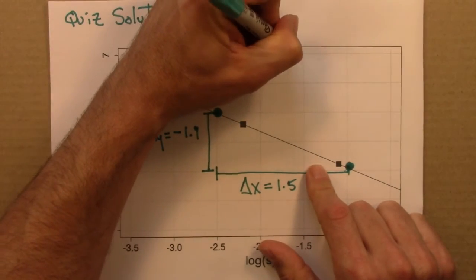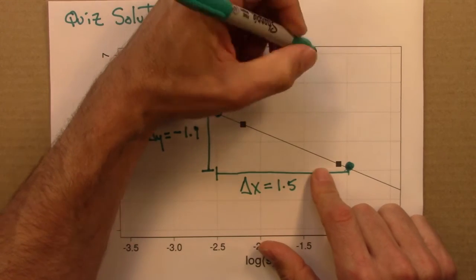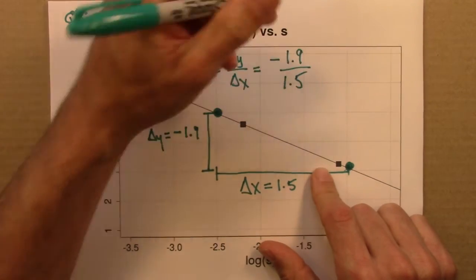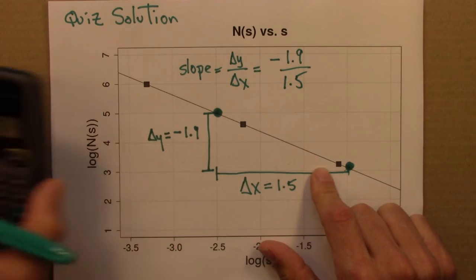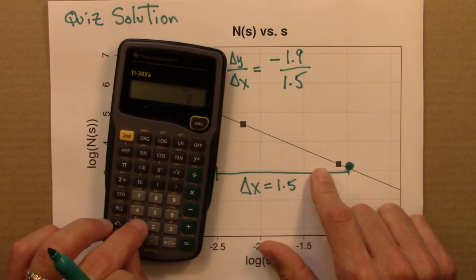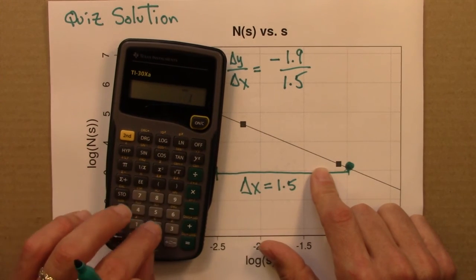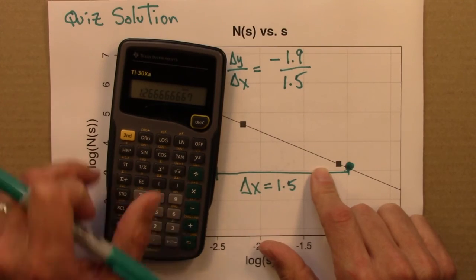And let's plug in minus 1.9 over 1.5. Let's see what we get. 1.9 divided by 1.5 equals 1.27.